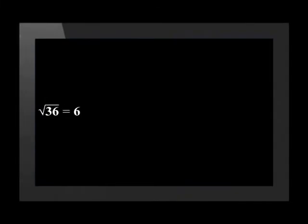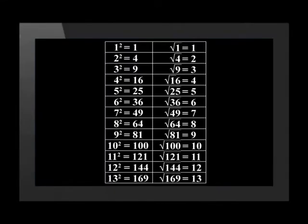When a perfect square is square rooted, it will have an answer that is an integer. For example, the square root of 36 is 6. It is important to know all the squared numbers up to 13 squared. Take a moment and write these down.